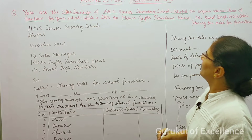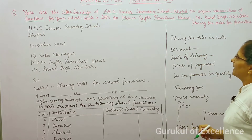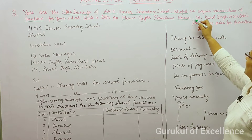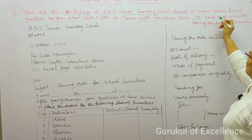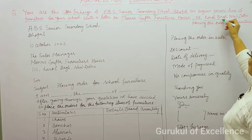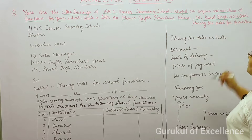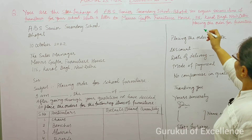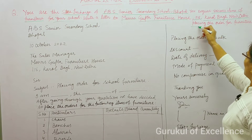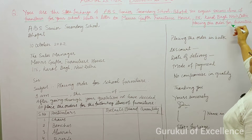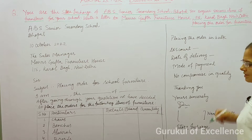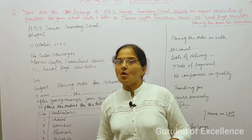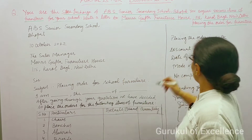You need to write a letter to Messrs Gupta Furniture House, whose address is 1-1-1-5 Karol Bagh, New Delhi, placing the order for the furniture. So this letter is of the type: placing the order.